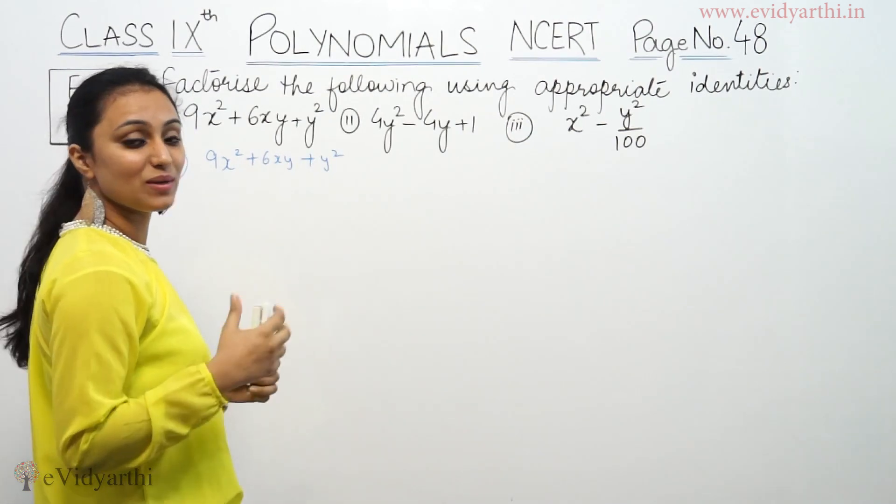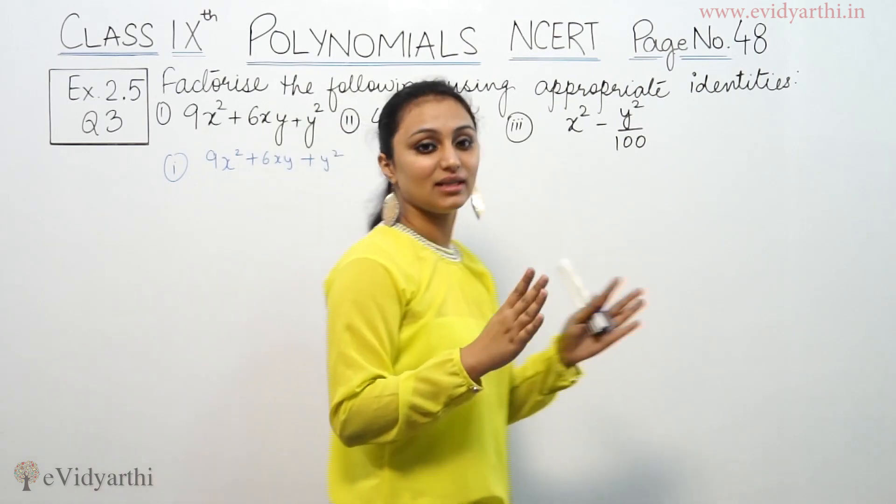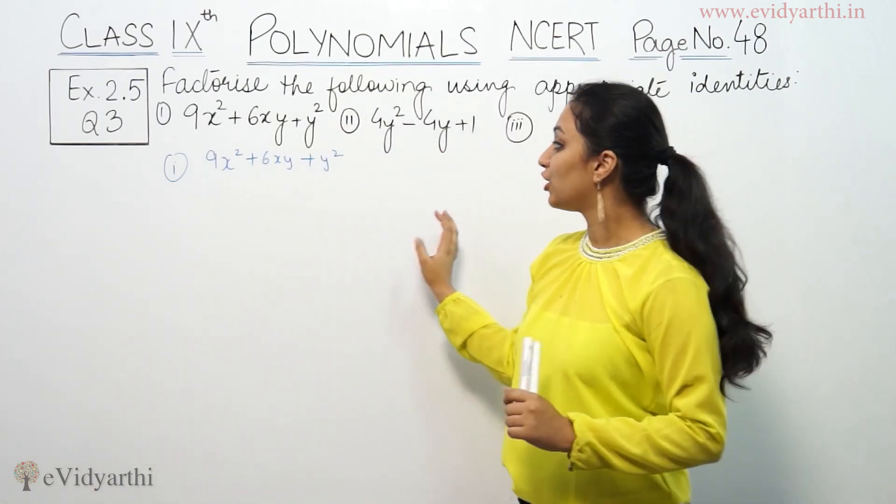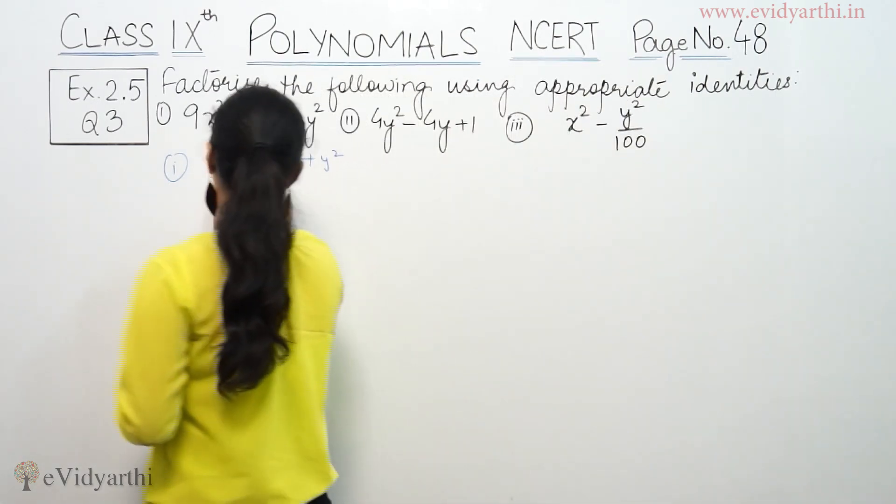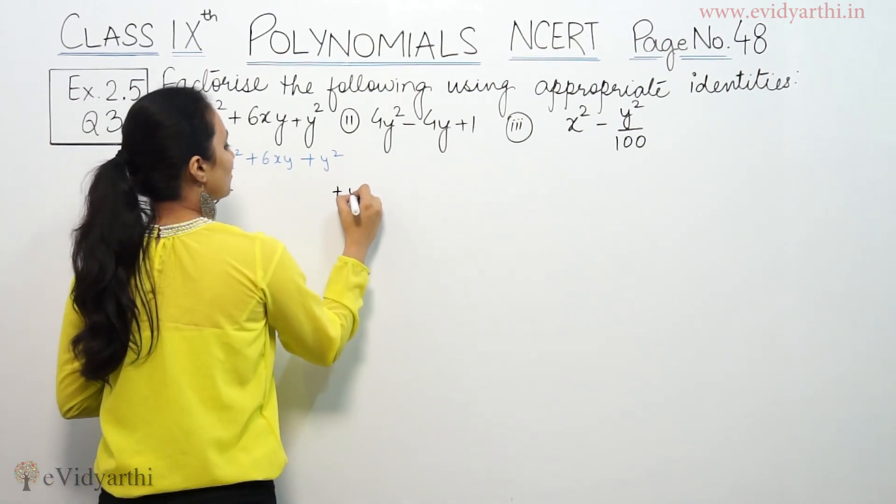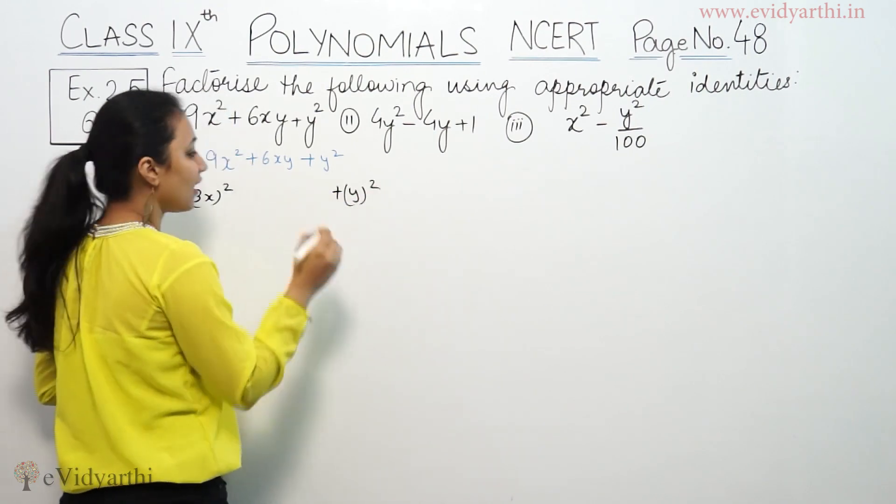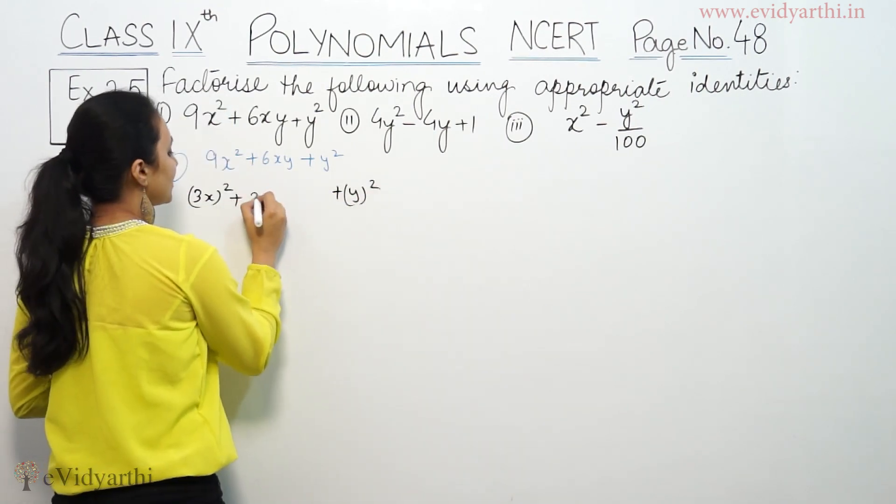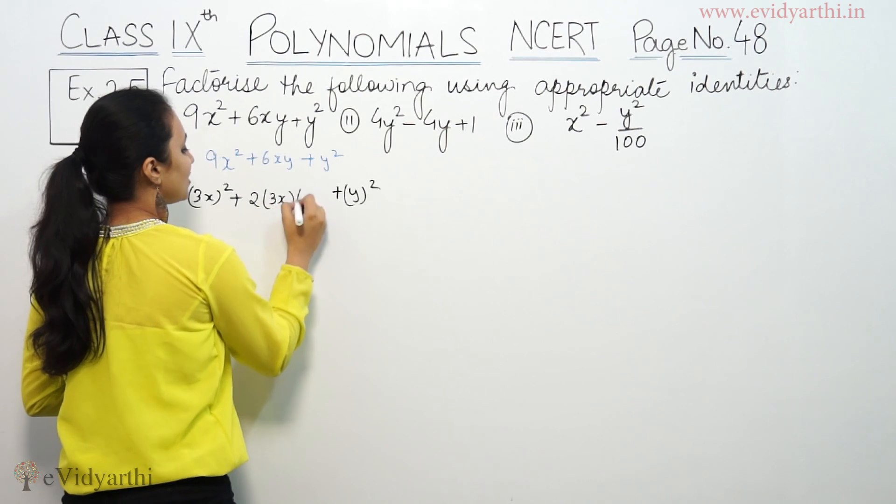When we factorize them, basically, we have to separate them into factors. This is a proper product. So, what we have in the first term is 9x² and last term is y². And if you want to see it, we have to say 2 into 3x into y.